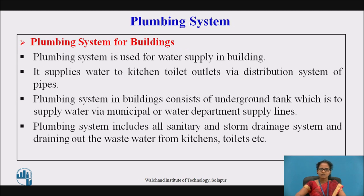The plumbing system consists of supplying water by the municipal or underground water supply from the municipal corporation. This water is supplied to the overhead water tank by pumping or piping distribution, and then supplied to the human outlets for further use. The plumbing system is used for water supply in buildings, supplying water to the kitchen and toilet outlets via a distribution system of pipes. The plumbing system in a building consists of an underground tank which supplies water via municipal or water department supply lines.